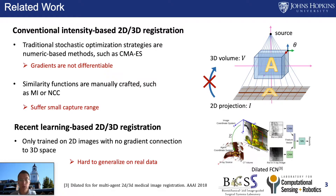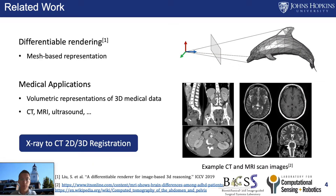Recent deep learning-based 2D-3D registration methods tried to learn the mapping of the pose parameter directly from 2D images, but there is still no gradient connection to the 3D space. Differentiable rendering is a popular technique in computer vision which connects 3D scenes with 2D images via gradient-based machine learning, with applications including single-view reconstruction. Previous approaches mostly focus on mesh-based representations.